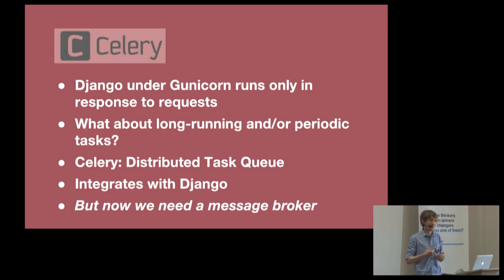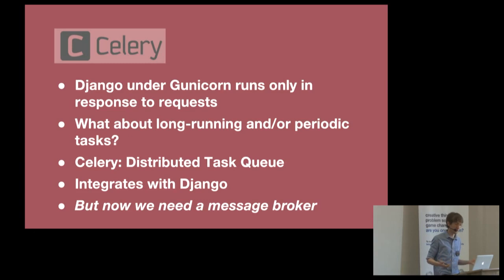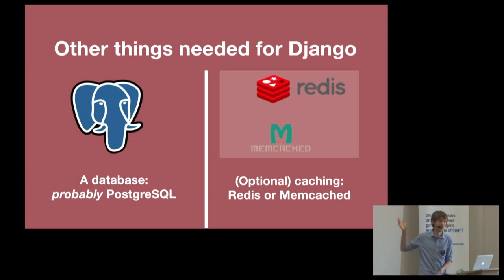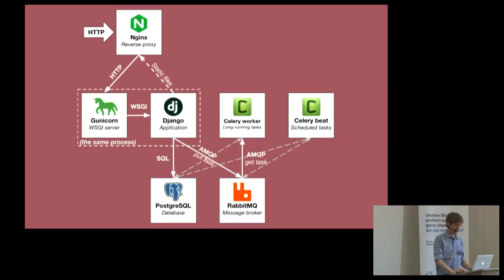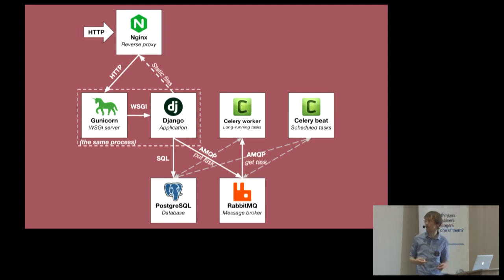Then there's Celery. Because Django under Gunicorn is only running in response to requests, if you want to do any kind of long-running tasks, you need a separate thing to do that - which is Celery. Celery is a distributed task queue with very nice, simple integration with Django. In order to queue jobs for Celery, you need a message broker. Other things you'd need for Django: obviously a database, probably PostgreSQL, and then you might want to hook it up to some caching using either Redis or Memcached. NGINX is in the front and receives the requests, sends them through to Django, Django speaks to the database, it also queues tasks for Celery to pick up. Celery Worker works on the long-running tasks, and Celery Beat is a bit like a cron thing - it runs scheduled tasks.